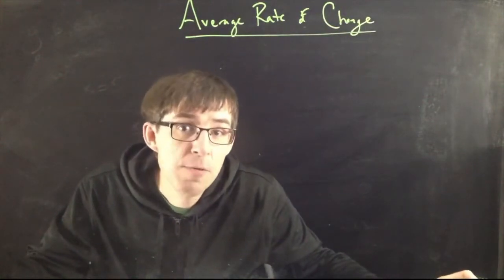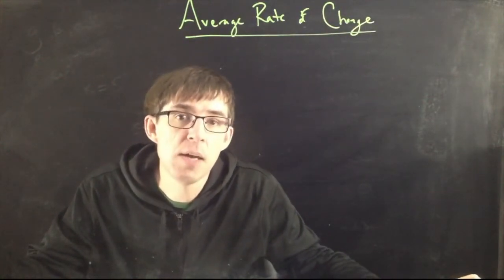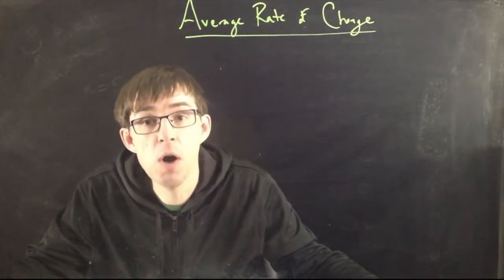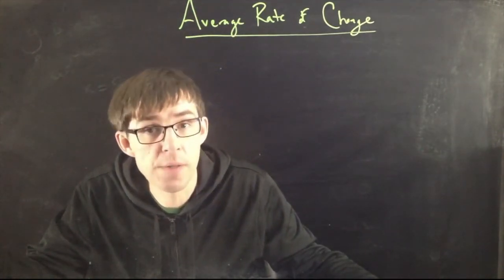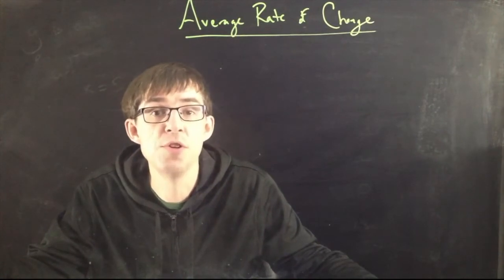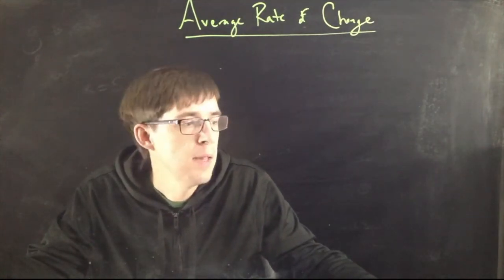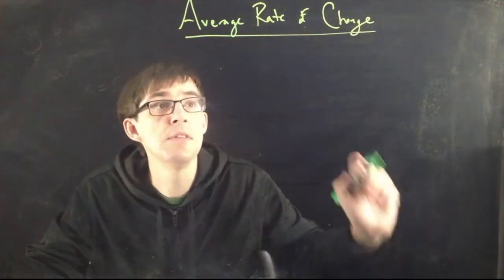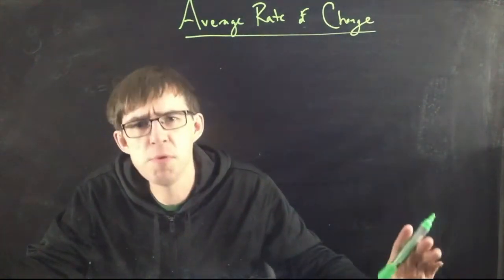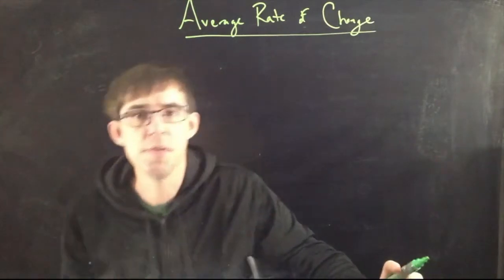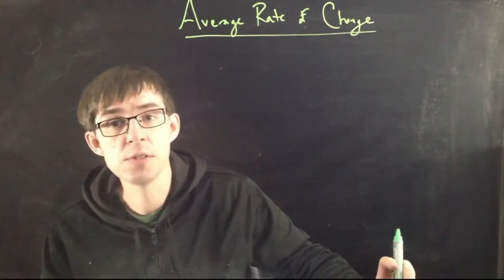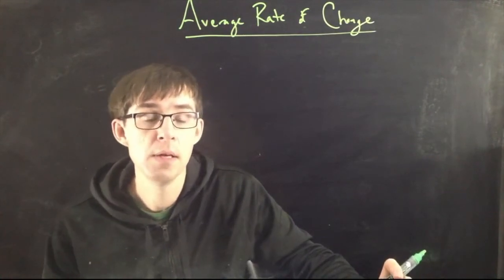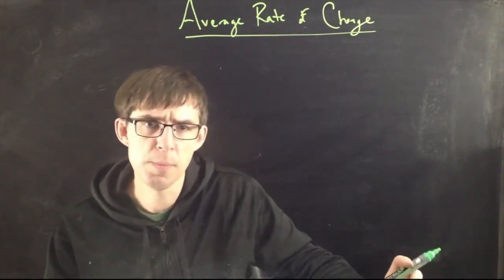We're going to talk about the average rate of change. This is a little introduction, like a baby version of the first major concept for the course, which is the derivative. The derivative is all about how things change over time, and the average rate of change is a simpler version of the derivative — pretty straightforward, not very complicated in the way that the derivative can be quite a bit more complicated.